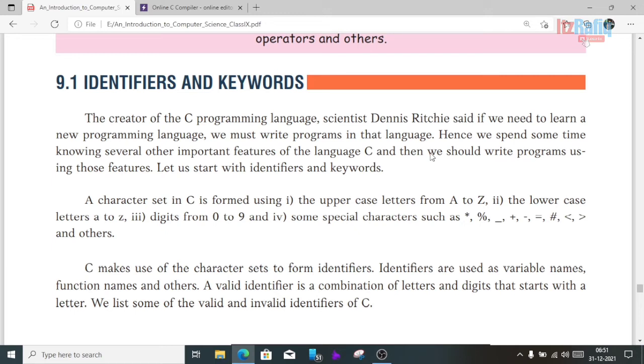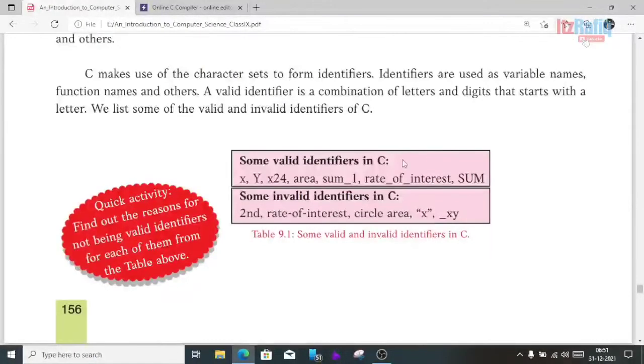Valid and invalid identifiers: When we declare an identifier, it must start with a letter, not a number. After that, if required, we can also add numbers but not at the beginning. Some valid identifier examples are: x, y, x24, area, sum_1, rate_of_interest, _interest, SUM. These are all valid.